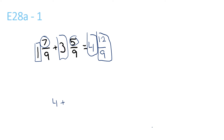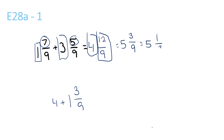So 12 over 9 converted to a mixed number is just 1 and 3 over 9. So that's just the same as 5 and 3 over 9, which is equal to 5 and 1 over 3.